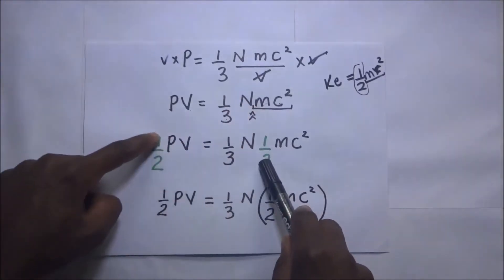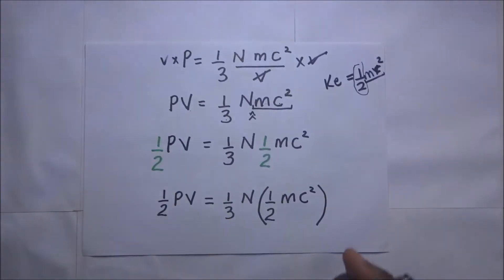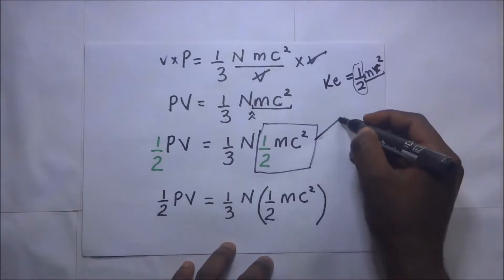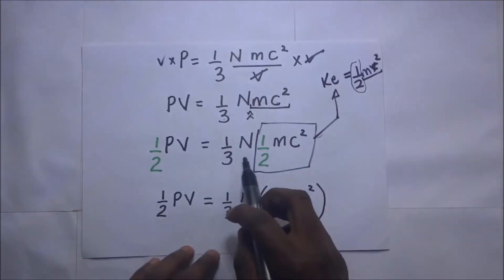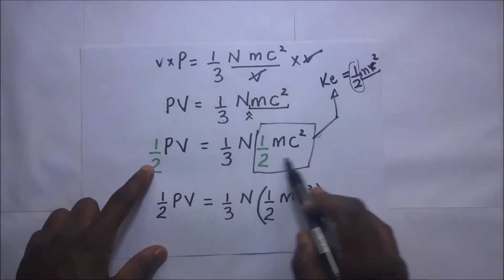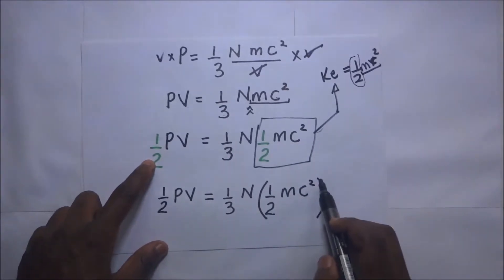We put one-half here. We multiply one-half on both sides so that at the end of the day we are having an expression that looks like kinetic energy. This is going to be, we multiply one-half on both sides, and then this becomes kinetic energy, which is one-half M c squared.